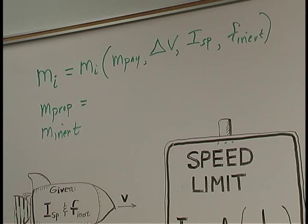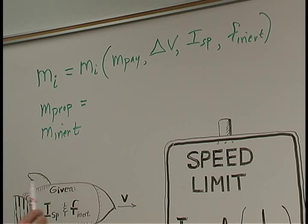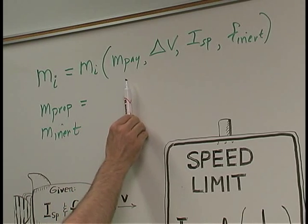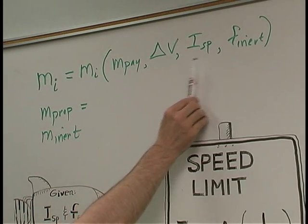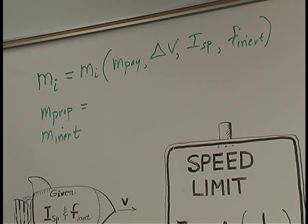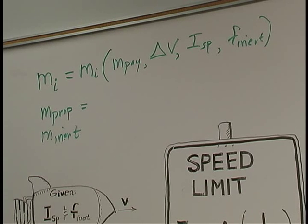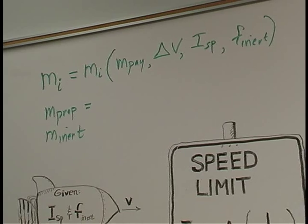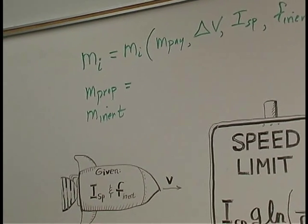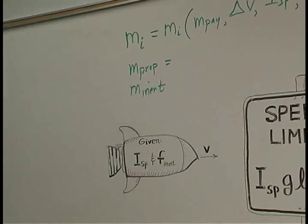So we see the functional relationship of total mass, propellant mass, and inert mass to, in particular, delta V, ISP, and F inert. If we find that our rocket is unable, with its speed limit, to achieve the velocity we're interested in, then we'll consider staging as follows.